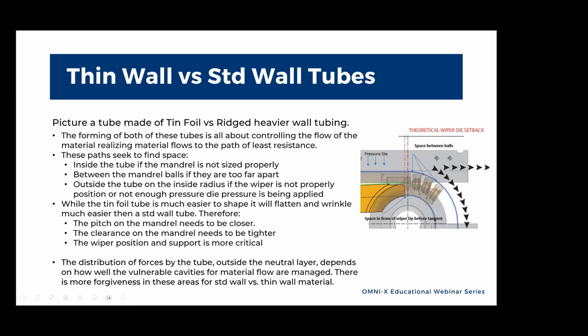While the tin foil tube is much easier to shape, it will flatten and wrinkle much easier than a standard wall tube. Therefore, the pitch on the mandrels, or the distance between the balls, needs to be closer. The clearance on the mandrel from the outside finish diameter of the mandrel shank and the ID of the tube needs to be tighter, and the wiper position is more critical. There is more forgiveness in these areas for standard wall versus thin wall material.